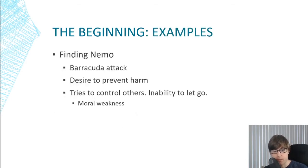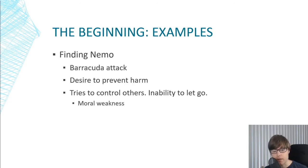In the beginning of Finding Nemo, we first see Marlin's ghost event — the barracuda attack on his family, the thing that destroys his entire family except for Nemo. That's the thing that really defines who he is. Out of that comes a coping mechanism: a desire to prevent harm, which is understandable. But he takes this so far that it negatively impacts his relationships, particularly his relationship with Nemo. He tries to control others, has an inability to let go, and tries to control Nemo. That is a moral weakness because it negatively impacts the health of his relationships.